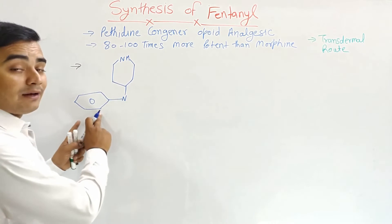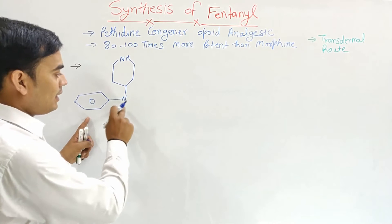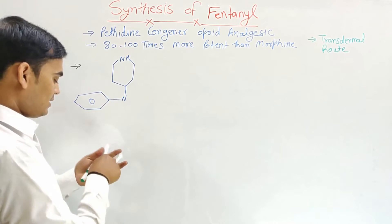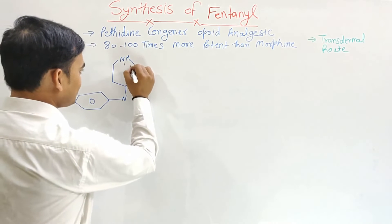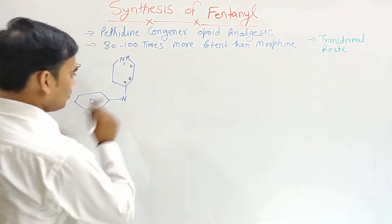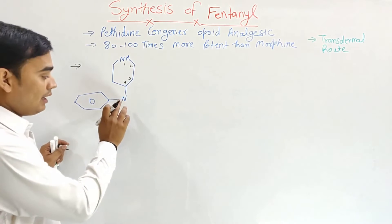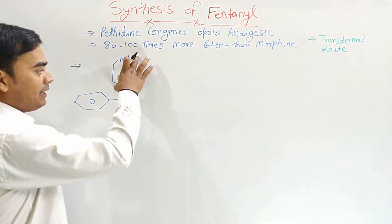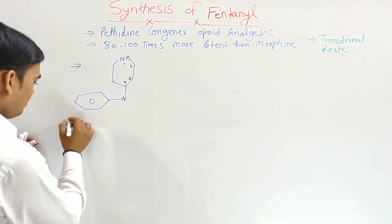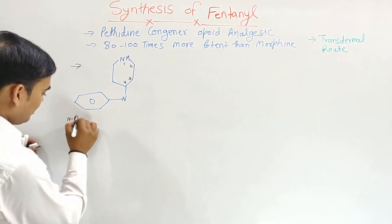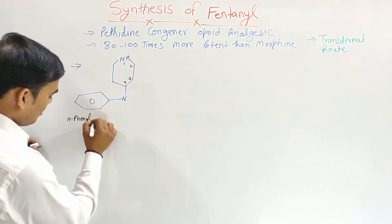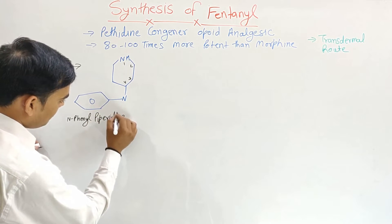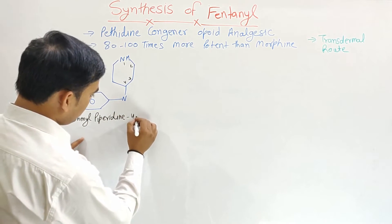The synthesis of fentanyl starts from N-phenylethyl piperidine-4-amine. Numbering from the first carbon position: first, second, third, fourth — the fourth position has the amine. This nitrogen has the phenyl group, giving us N-phenyl piperidin-4-amine.